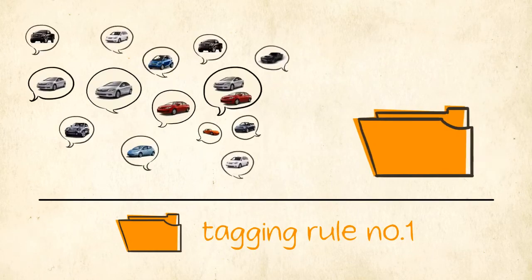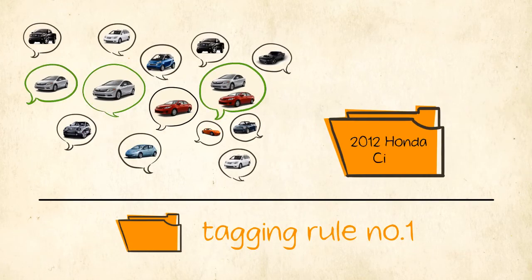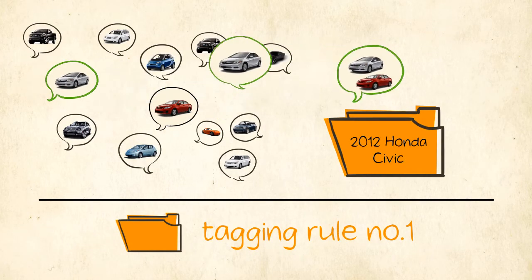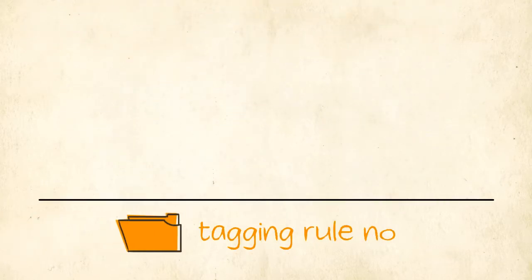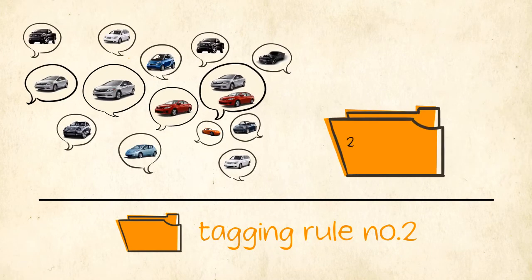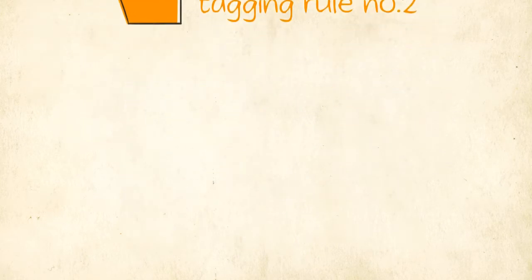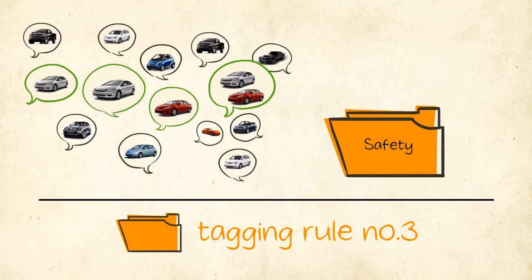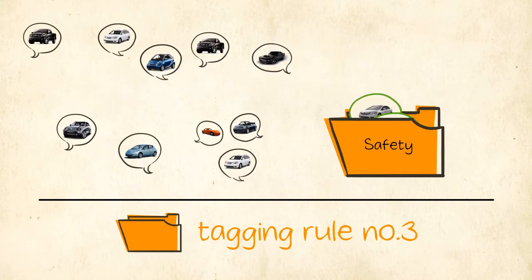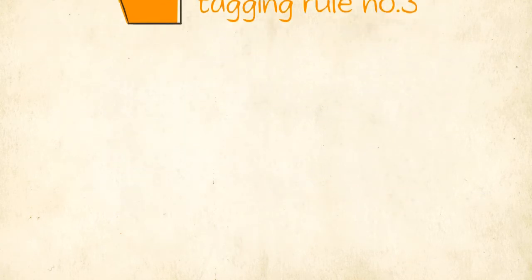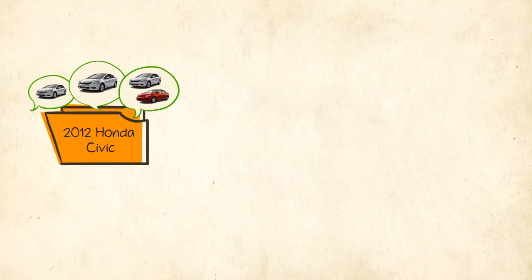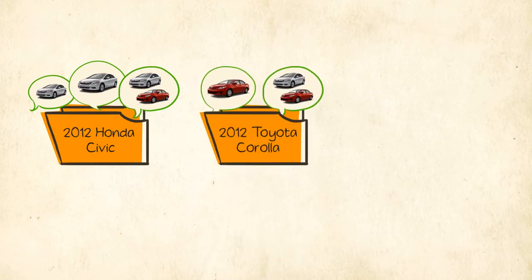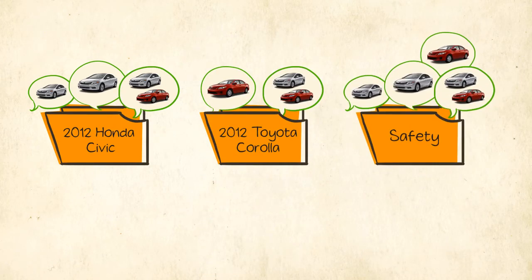Heartbeat uses tagging rules to organize the found conversations. Let's say you want to narrow your search to only the newest car model and also highlight conversations that relate to safety. You could set up these tagging rules: 2012 Honda Civic, 2012 Toyota Corolla, and safety.